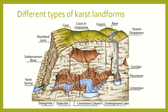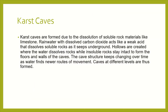Now here is a picture showing different types of karst landforms. Let's start from karst caves. Karst caves are usually formed by dissolution of soluble rock material such as limestone. Rainwater with dissolved carbon dioxide acts like a weak acid that dissolves soluble rocks. Hollows are created where water dissolves rock, while insoluble rock stays intact to form the floors and walls of the cave. Karst at different levels are thus formed.